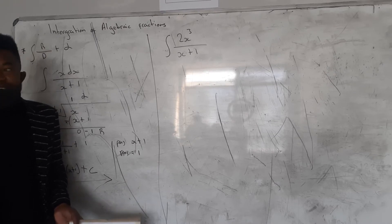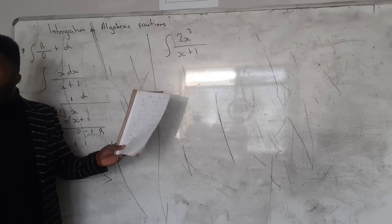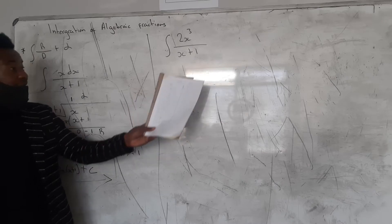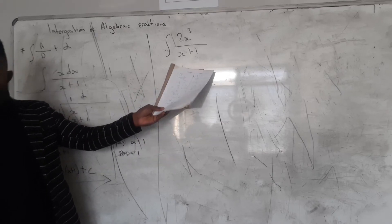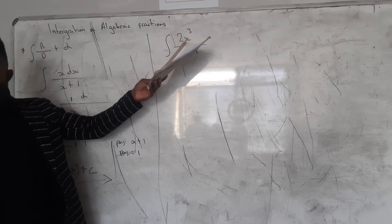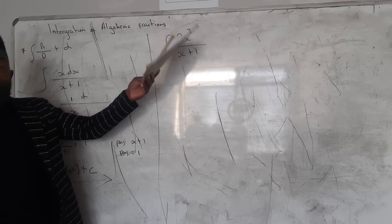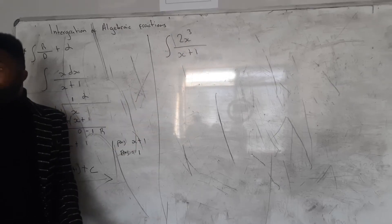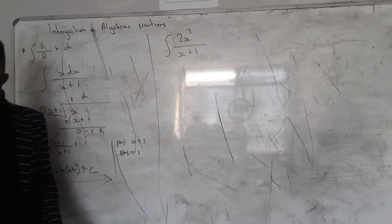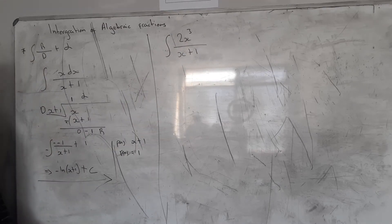Definitely it's a fraction, but I can see that Type 2 doesn't work. If I differentiate here, I'm going to have 1, and there's no way I can correct it to have 2x cubed. So you can see that Type 2 doesn't work.